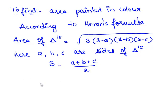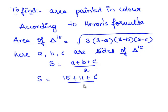Now let us find the semi-perimeter. Therefore, S is equal to A (15 meters) plus B (11 meters) plus C (6 meters), divided by 2, which is 16 meters.